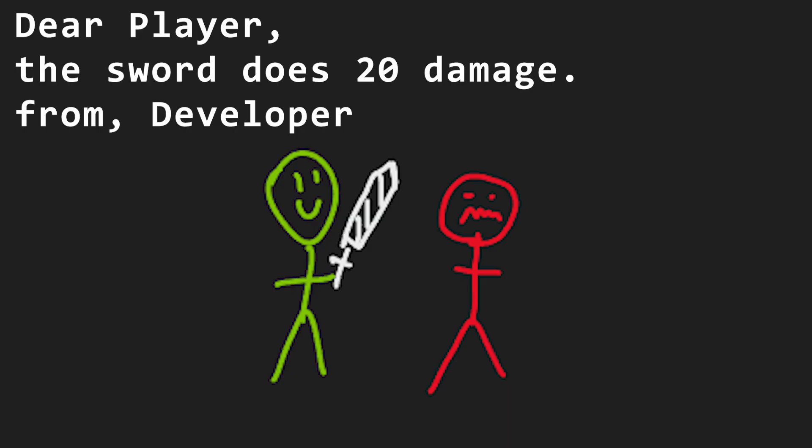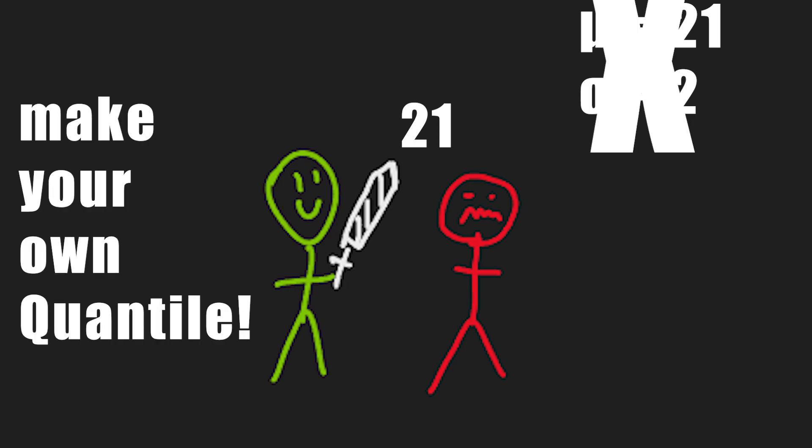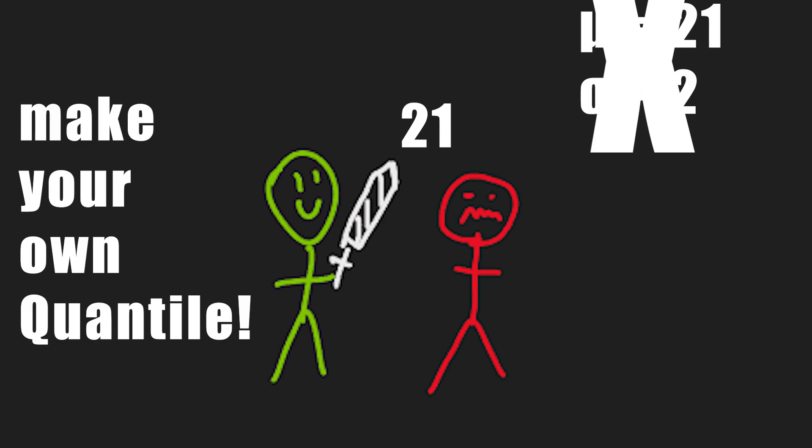Lie. We can say it does 20 damage, but in the long run, actually have it do more. To do this, you could blatantly lie and make the mean 21 damage, or you could make your own quantile function, which is going to be the focus of this final bonus section.